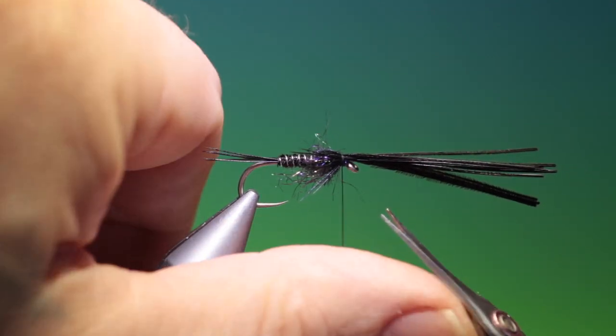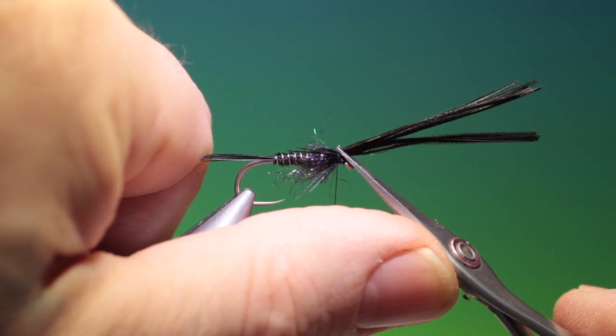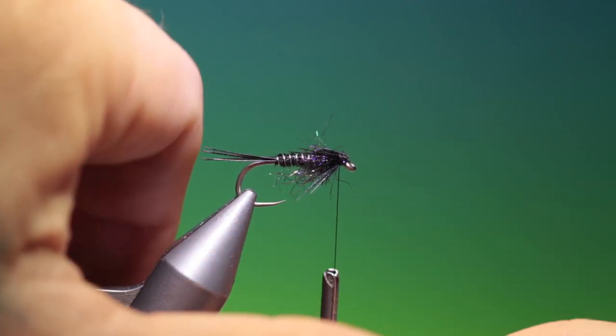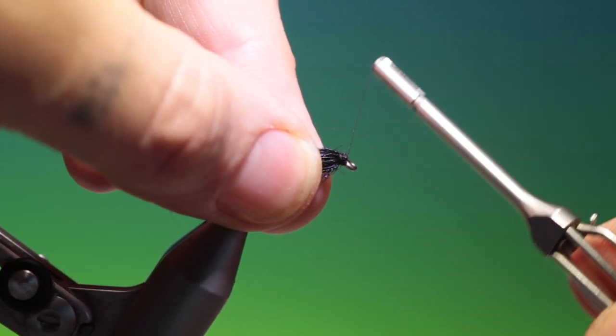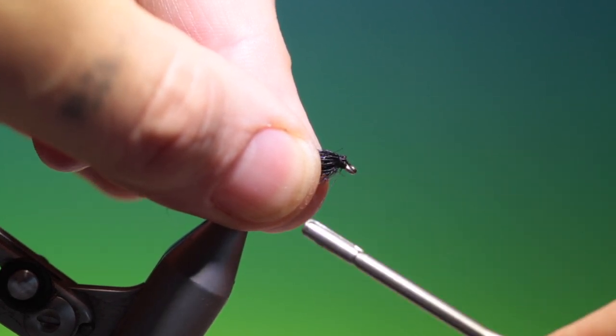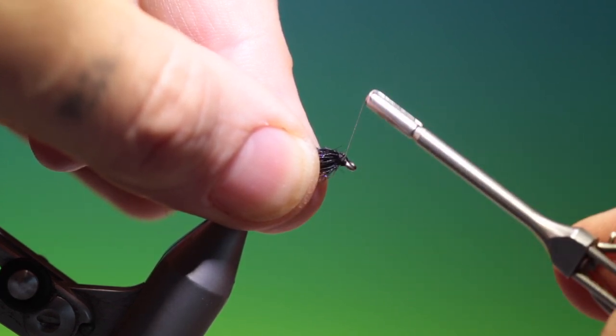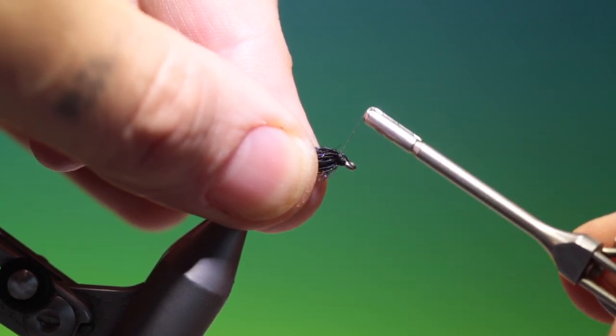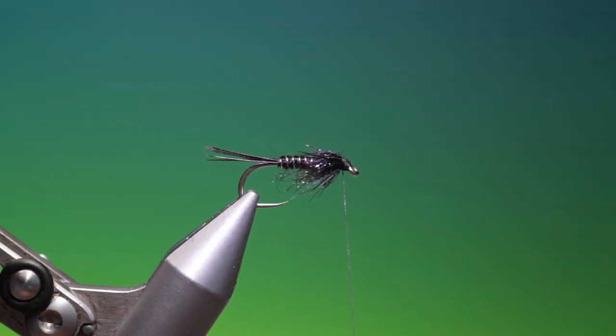And we take our scissors, carefully trim this off at an angle. And we start at the hook eye so our thread doesn't slip. And we work our way up over, forming a nice neat head. And we finish her.